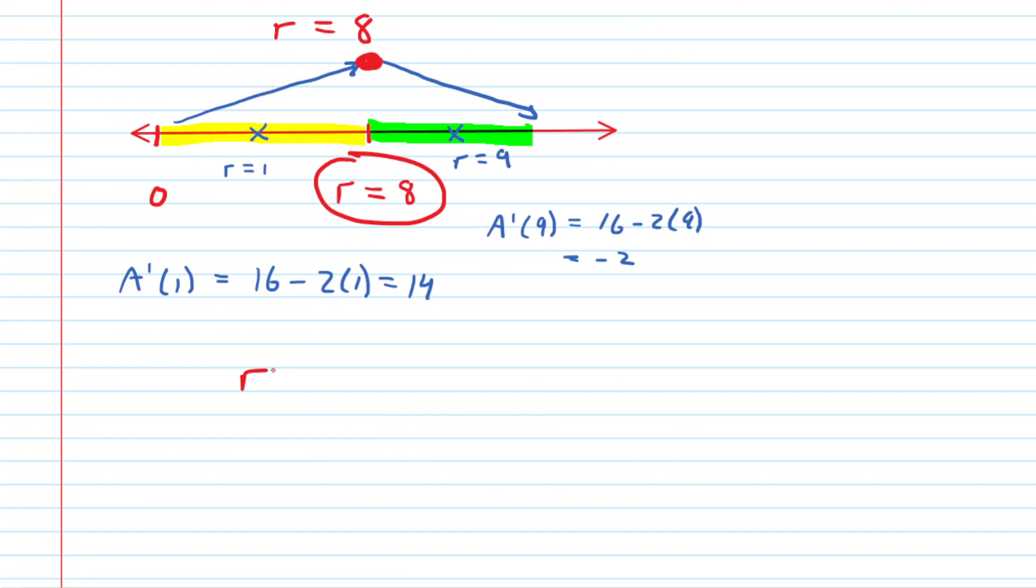So we know that the radius is equal to 8 inches. The question wanted the diameter, so that's simple. Diameter is equal to twice the radius. So we just double our radius, and we end up with 16 inches as the correct answer.